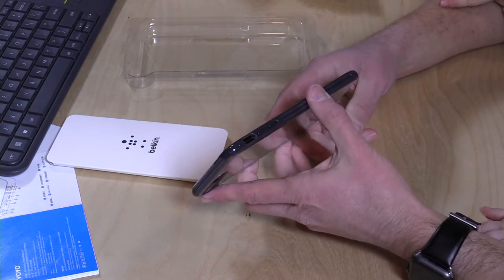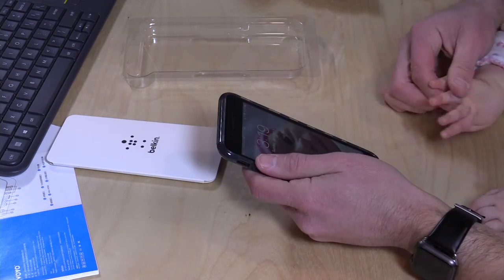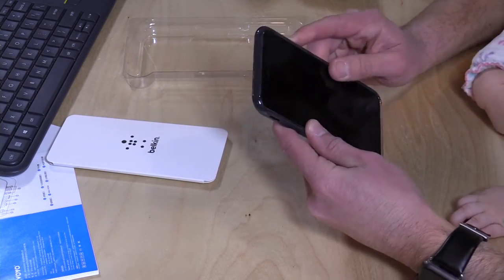It doesn't really add that much thickness to the phone at all, which is good. I've got my assistant here, my seven-month-old Ellie. You can see her little hand as we go through this.